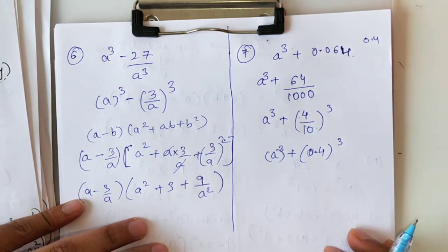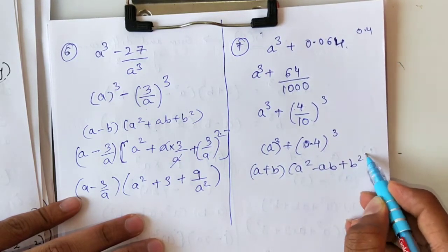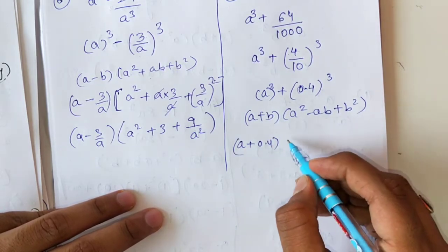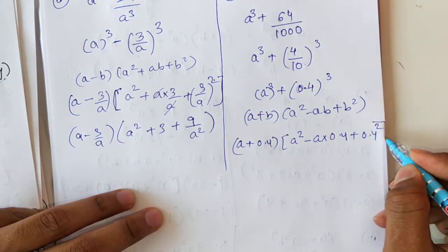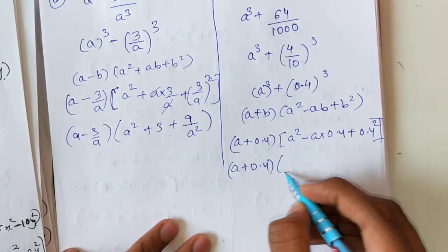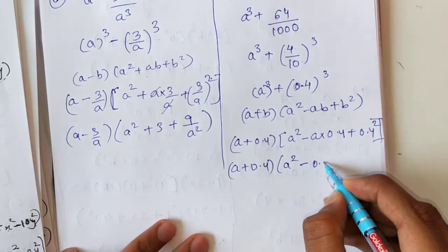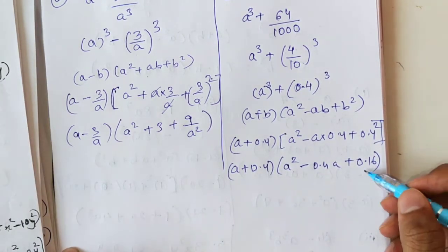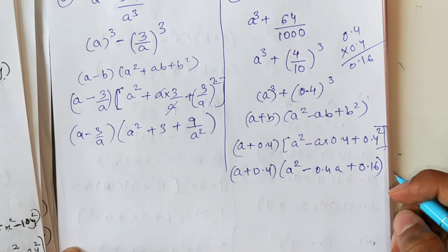Now I can write this as a³ + b³ form. The formula for a³ + b³ is (a + b)(a² - ab + b²). Substituting a = a and b = 0.4: (a + 0.4)(a² - 0.4a + (0.4)²). Since 0.4² = 0.4 × 0.4 = 0.16, the final answer is (a + 0.4)(a² - 0.4a + 0.16).